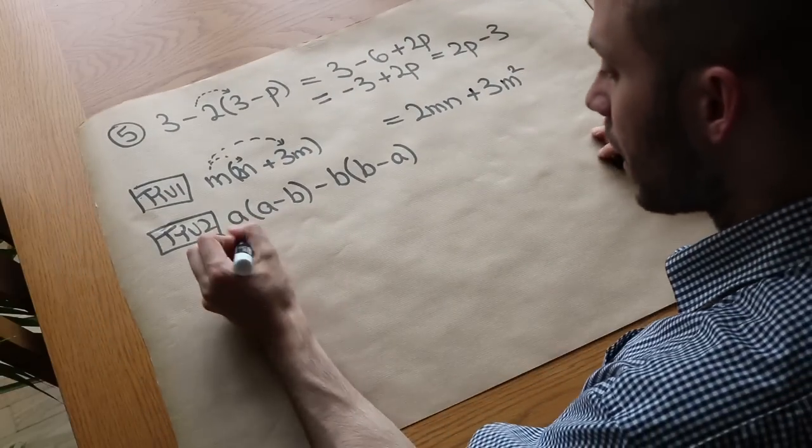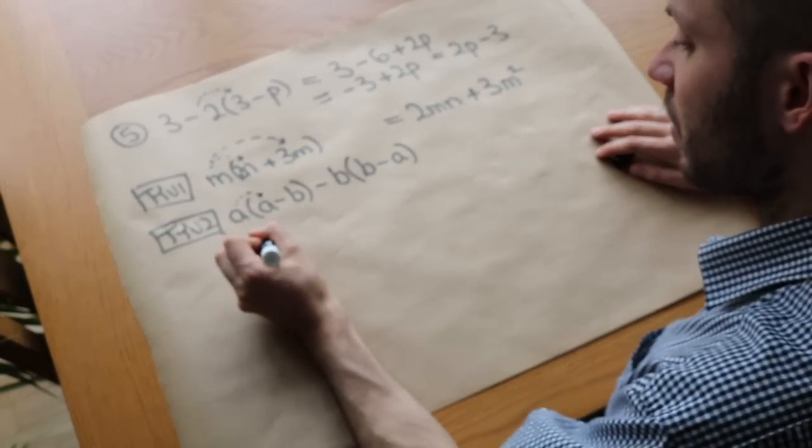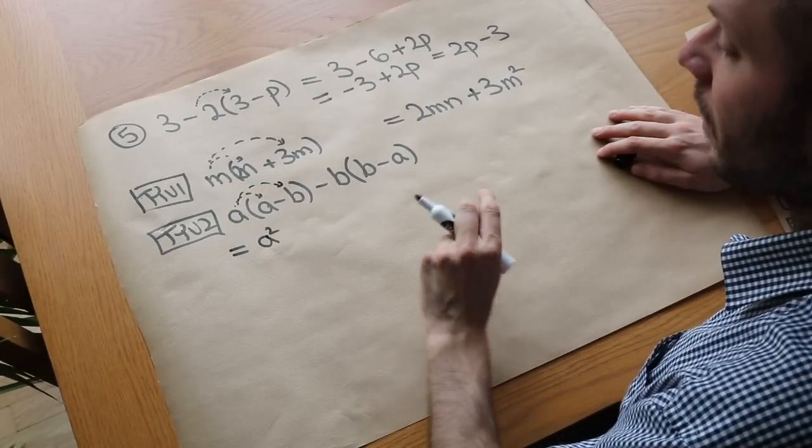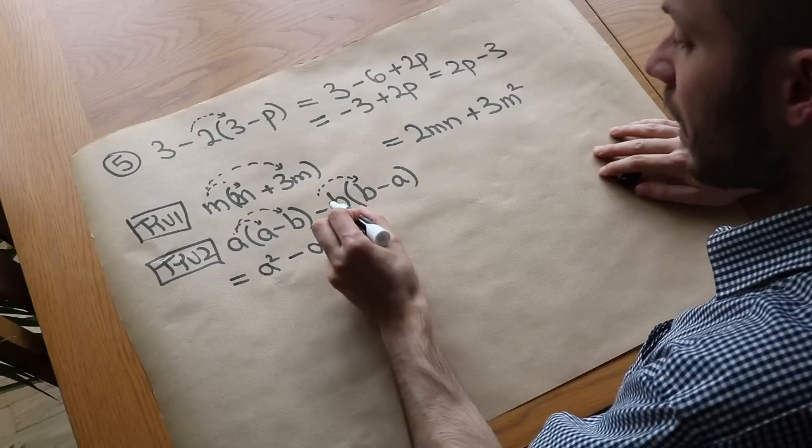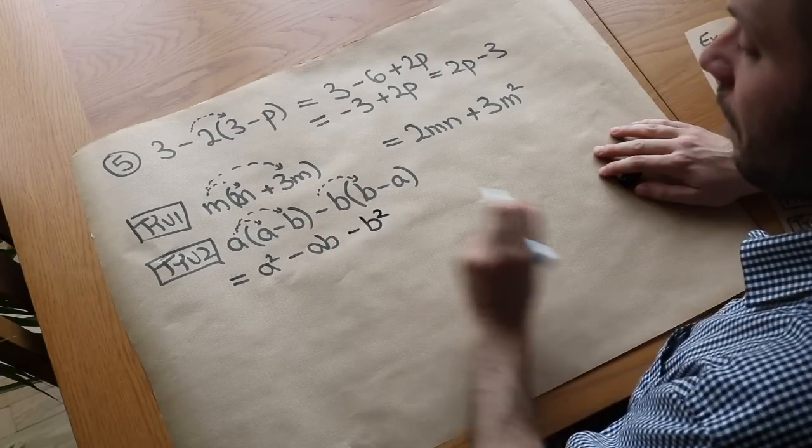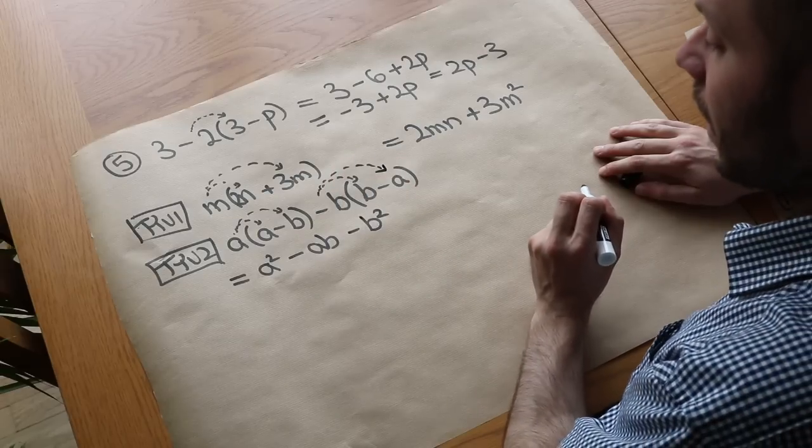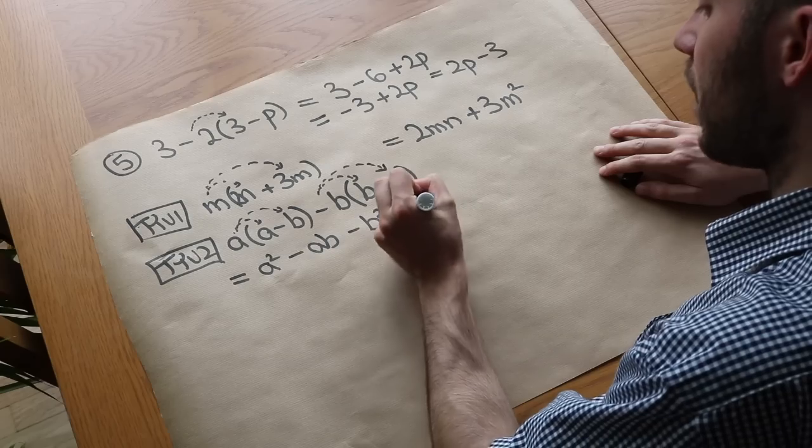And now let's do this harder one here. Let's do it bit by bit. We've got the a times the a, which is a squared. We've got a times negative b. That's going to be negative, so it's minus ab. Then we've got minus b times b, which is minus b squared. And finally, we've got negative b times negative a. That's going to be positive. Negative times negative is positive. So it's going to be plus ab.